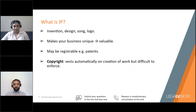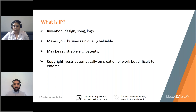Some IP rights are registrable, such as by way of a trademark or a patent, which we'll discuss in more detail shortly. Some IP rights, such as copyright or trade secrets, cannot be registered, but they're still important to have. Your favourite book, for example, cannot be protected by a registrable form of IP, but it is protected by copyright. Similarly, your website can't be registered, but it is protected by copyright.